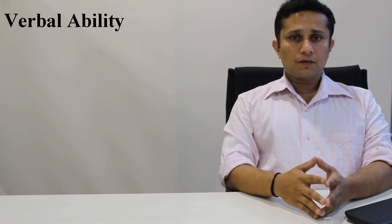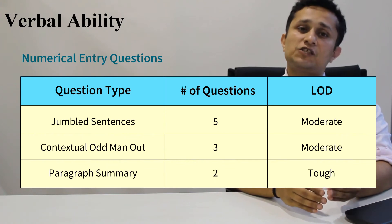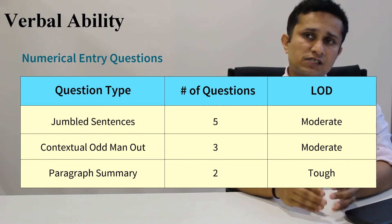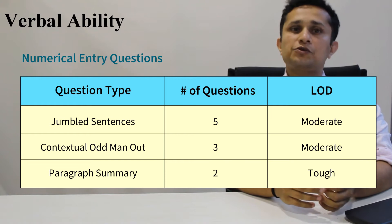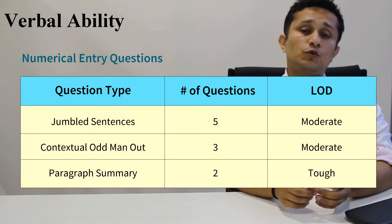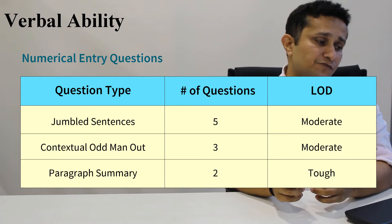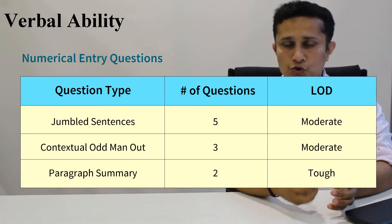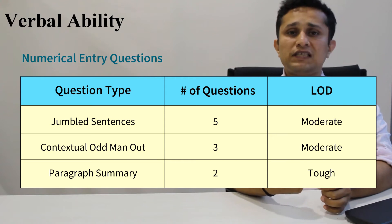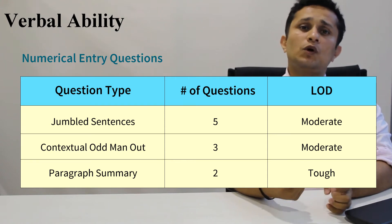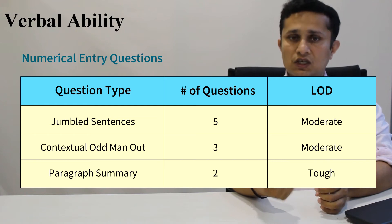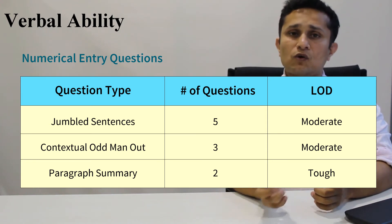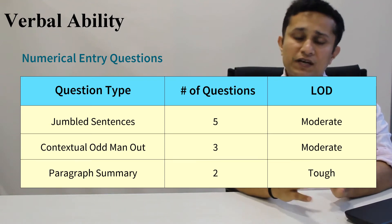Now coming to the numerical entry or theta questions. It had all the usual suspects: para jumbles, para summary, and contextual odd man out. Unfortunately for you, even though there was no negative marking, these were all either moderately difficult or tough. So you couldn't really bank on these questions to give you a lot of marks except as flukes or if you were very sure. So here I would have looked at only 1 or 2 very serious attempts for an average student.